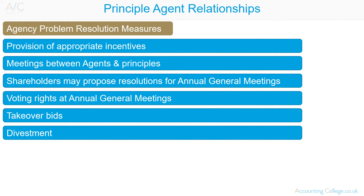Agency problem resolution measures between directors and shareholders include: provision of appropriate incentives so that the agent acts in the way principals want them to; meetings between agents and principals; shareholders may propose resolutions for vote at AGMs; and voting rights at the AGM provide shareholders with the ability to support or oppose resolutions. In extreme cases, shareholders may accept takeover bids or divest their shares.